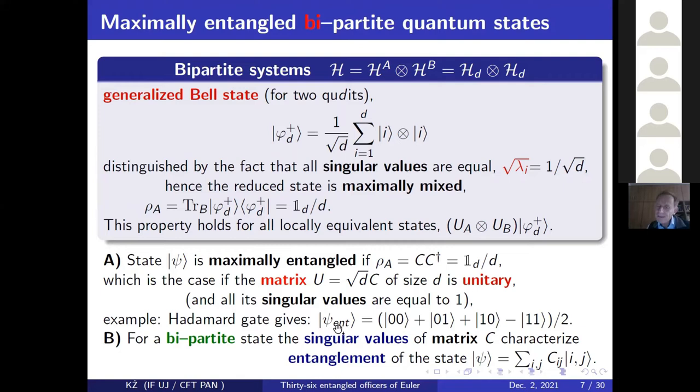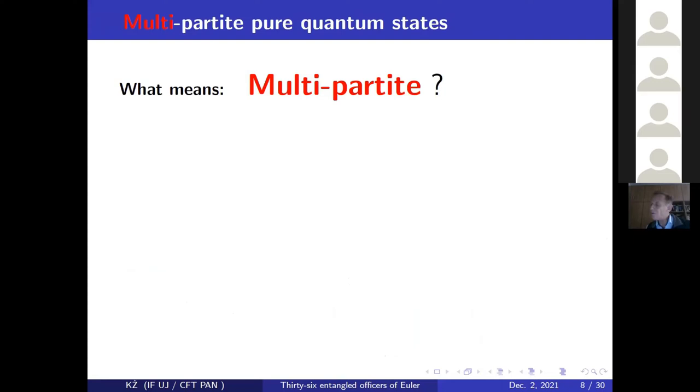I can call it Hadamard state: 0,0 plus 0,1 minus 1,0 minus 1,1. So look, you have three pluses and 1 minus. It is equivalent to the Bell state. It is really an entangled state because this matrix, if you compute this matrix, is 1, 1 in the second column, 1, minus 1, so just a Hadamard matrix is unitary. So in short, for bipartite systems, everything is simple. We write down the state in a product basis, and this matrix C characterizes entanglement.